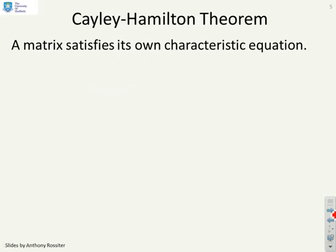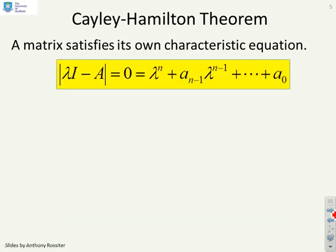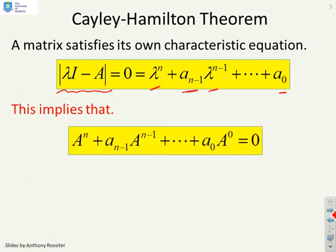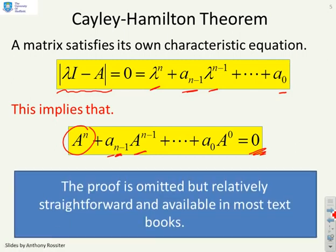The Cayley-Hamilton theorem states that a matrix satisfies its own characteristic equation. So what you need to know is: if the characteristic equation of a matrix A is given by lambda to the n plus a_{n-1} lambda to the n minus 1, all the way down to a_0, then if you substitute the matrix A in for lambda, you will get 0. So A to the n plus a_{n-1} A to the n minus 1 and so on must equal 0. That's what the Cayley-Hamilton theorem tells you. I'm not going to give a proof here, but it's relatively straightforward and available elsewhere.